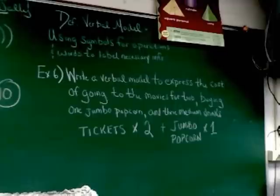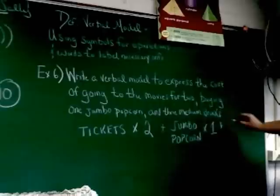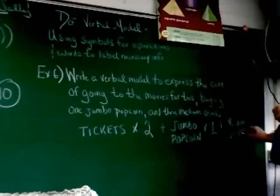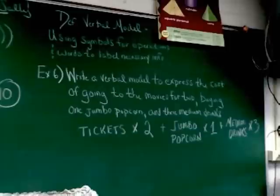Alright. And what's the last part going to be here? Medium drinks. Because I chose medium drinks. Medium drinks times three. Medium drinks times three. And this is close to being finished. The only thing you need to add in would be equals, because it's all got to add up to something. And you want to say equals the total cost. And that's a verbal model.